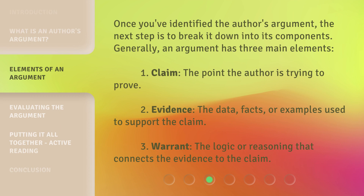Once you've identified the author's argument, the next step is to break it down into its components. Generally, an argument has three main elements: 1. Claim — the point the author is trying to prove. 2. Evidence — the data, facts, or examples used to support the claim. 3. Warrant — the logic or reasoning that connects the evidence to the claim.